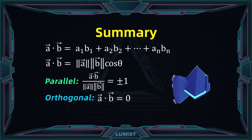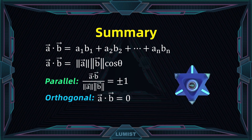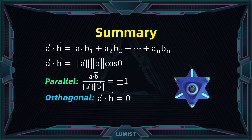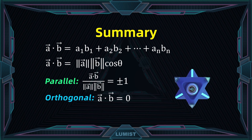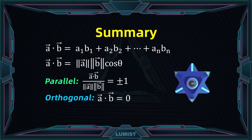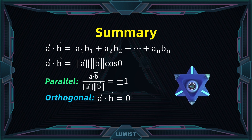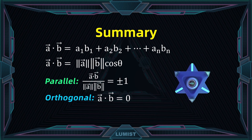In summary, today we discussed the computation and significance of the dot product. The calculation is quite straightforward, but the fact that it gives us information on the angle between two vectors is very important. We also saw how to determine whether two vectors are parallel or orthogonal based on their dot products. That's it for today, and we will see you next time.